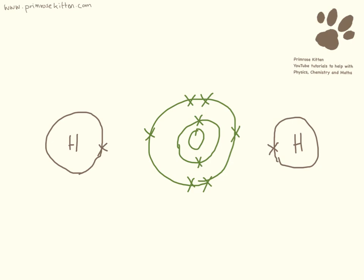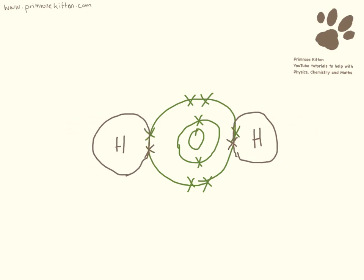Now covalent bonding is where electrons are shared between things. This is the electronic structure of oxygen and hydrogen here. And what happens in covalent bonding is they share.